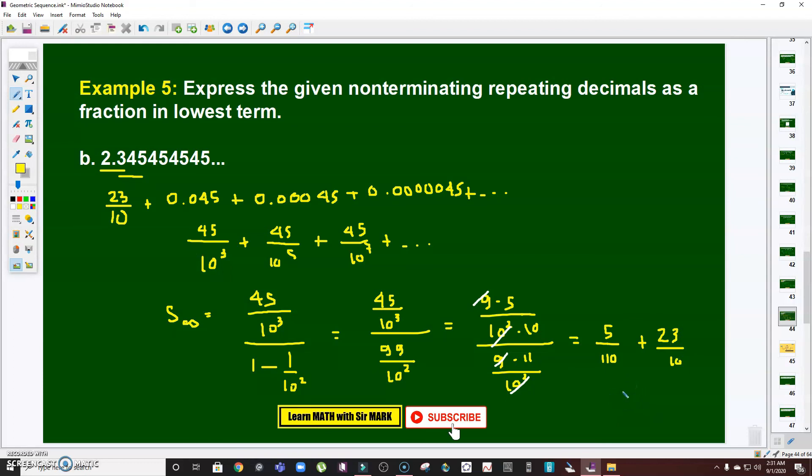So if we're going to add this, 5 over 110 plus 23 over 10 is 129 over 55. You can check it. So that's how we do it.